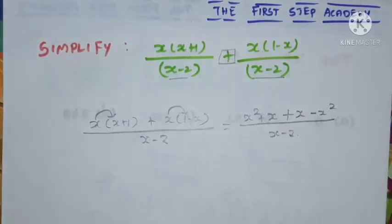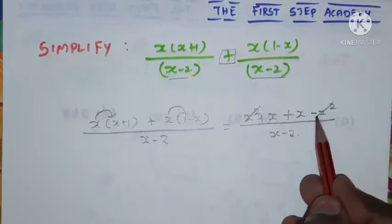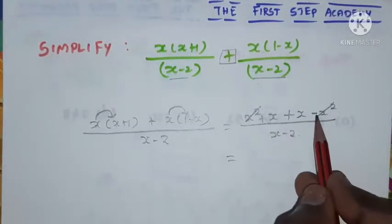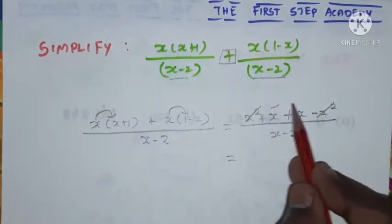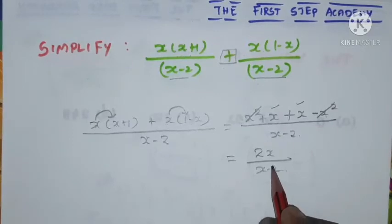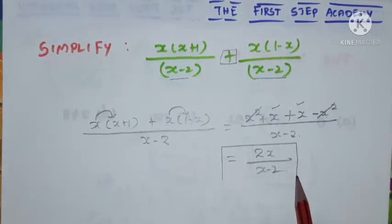Now look at this x squared and this x squared will cancel further because this is positive, this is negative, right, so cancelled. So 1x plus 1x is 2x divided by x minus 2.